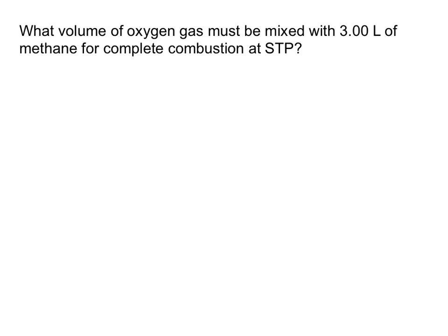Here's another problem: what volume of oxygen gas must be mixed with 3 liters of methane for complete combustion at STP? Notice they have given us very few numerical values and no balanced equation, so there's a lot of legwork beforehand. Methane is CH4; combustion reactions have oxygen gas, and the products are CO2 and H2O. Balancing: 1 carbon on each side, 4 hydrogens on the left balanced by placing a 2 in front of H2O, giving 4 oxygens on the right, so we place a 2 in front of O2.